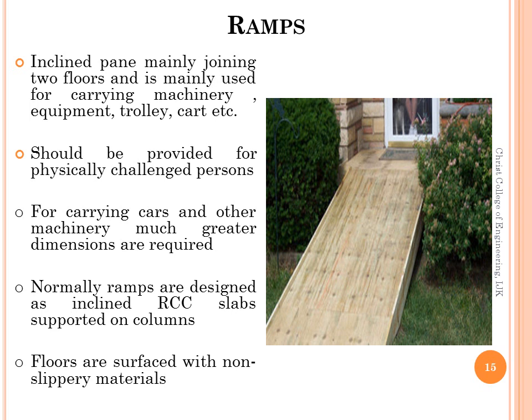The next topic is ramps. A ramp is an inclined plane mainly joining two floors and is mainly used for carrying machinery, equipment, trolleys, carts, etc. It should be provided for physically challenged persons. For carrying cars and other machinery, much greater dimensions are required, whereas for persons only less width is needed. Ramps are normally designed as inclined RCC — reinforced cement concrete — slabs supported on columns. Floors are surfaced with non-slippery materials for safety.